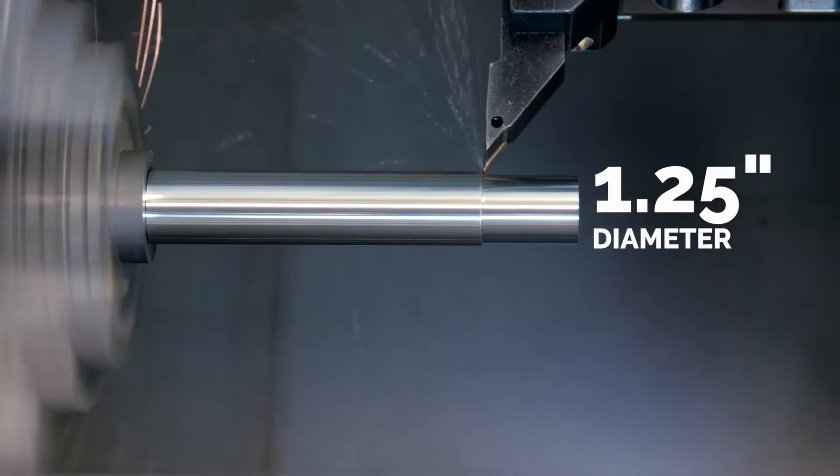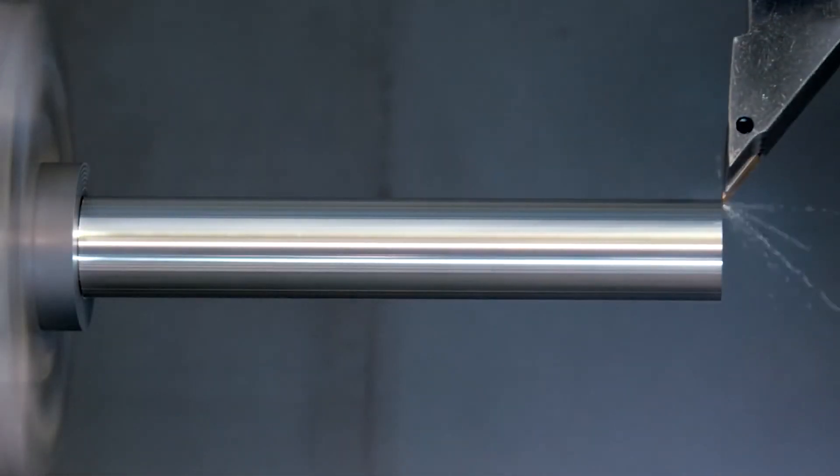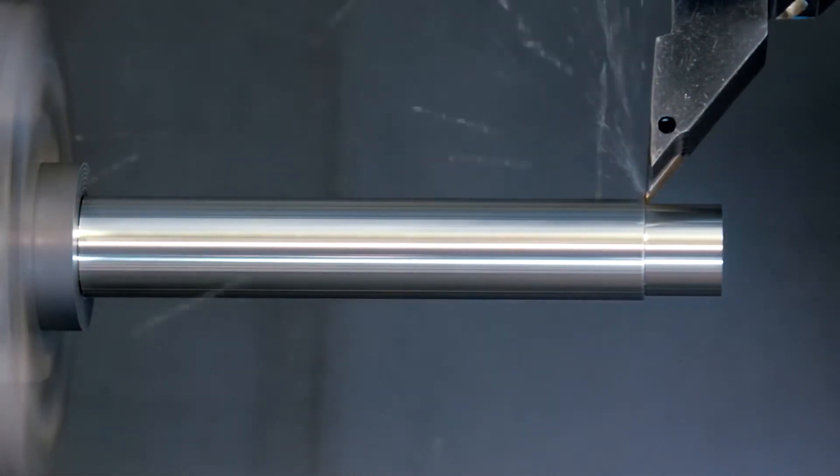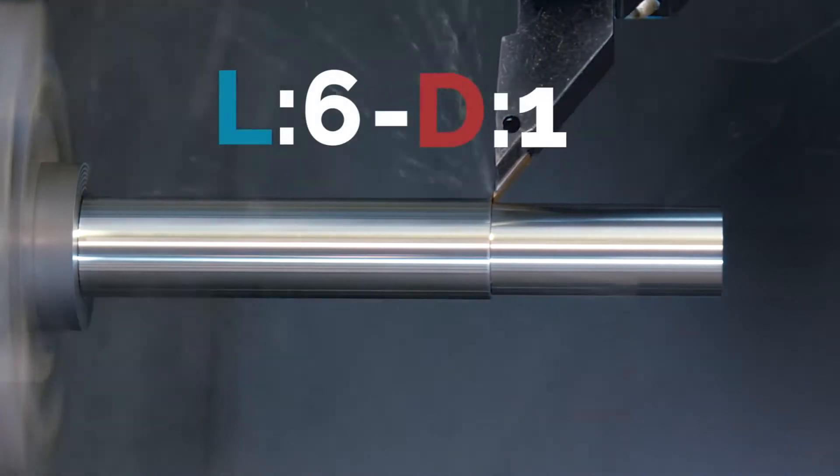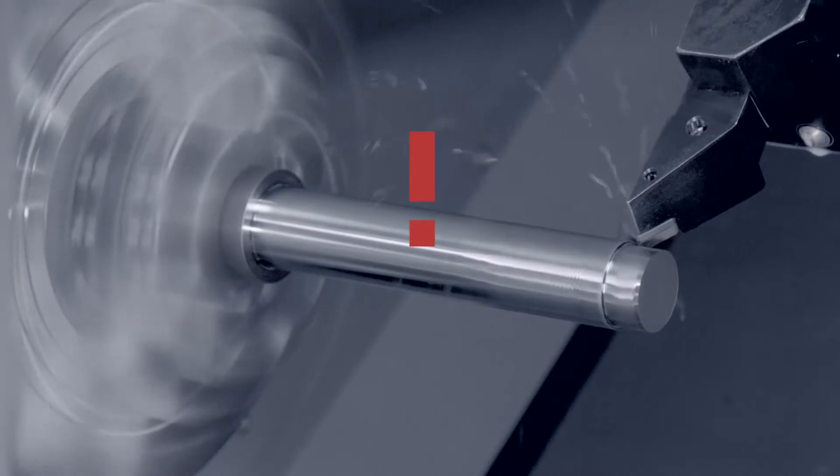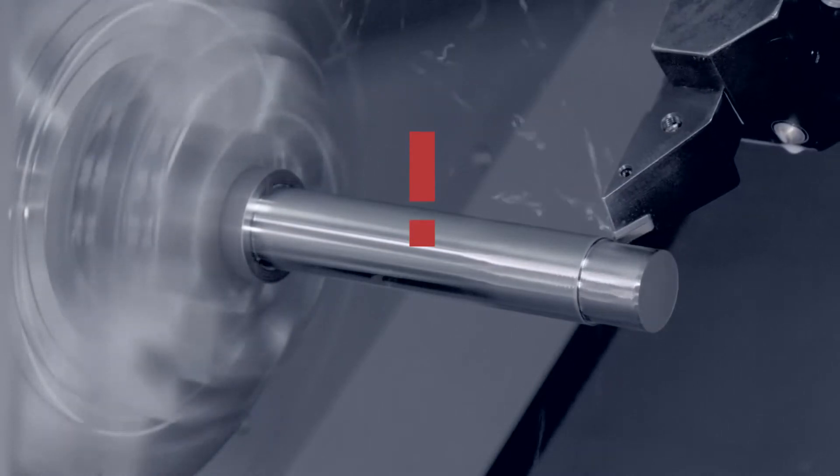Once we reach a diameter of 1.25 inches, this is where we begin to see chatter. On the next pass, at a diameter of 1.15 inches, we're at a 6 to 1 LTD ratio which is well past where we normally would need tailstock support. And indeed, we have some serious chatter.